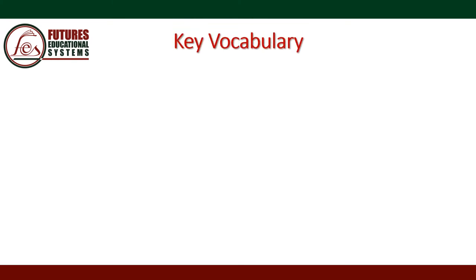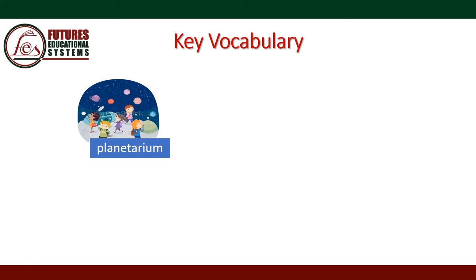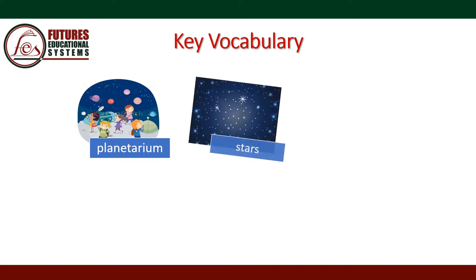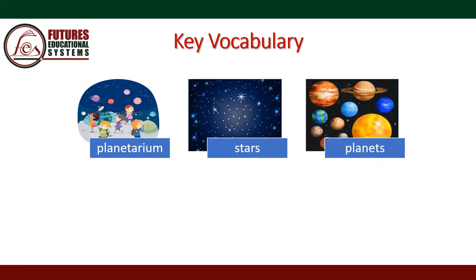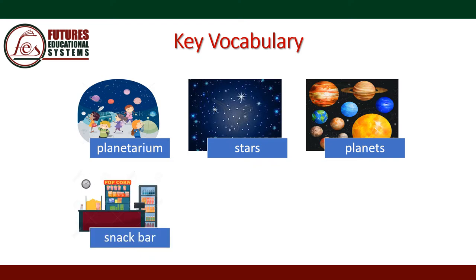Now let's learn some new vocabulary. The first word is 'planetarium' — a planetarium is a building in which moving pictures and images of the sky at night are shown using a special machine. The next word is 'stars.' Then 'planets' — we have eight planets. 'Snack bar' — the snack bar is like a candy shop.